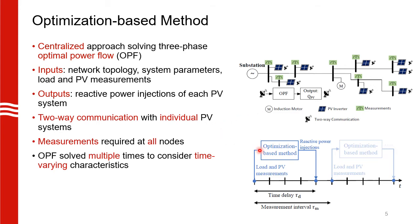Here is the timeline for how we do it. We assume that all measurements are available at some interval tau_m. Once we have these measurements, we solve the OPF problem and the solution is applied to the grid after some delay tau_d. This delay comprises both the computation time for the OPF to converge and the time delay associated with the two-way communication. Once we have the new set of measurements, we repeat this process all over again.